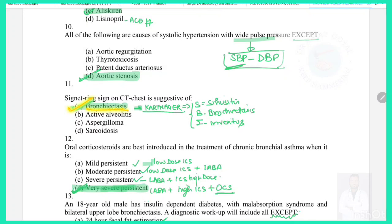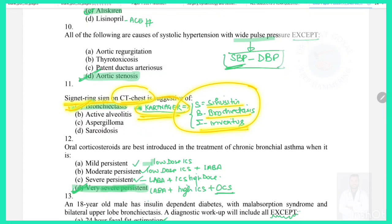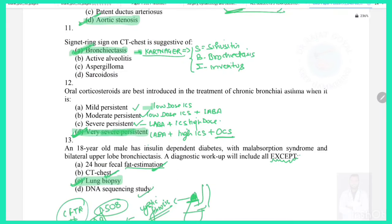Question 11: Signet ring sign on CT chest is suggestive of — this is a direct question and the answer is bronchiectasis. In bronchiectasis associated with Kartagener syndrome, we can see sinusitis, bronchiectasis, and situs inversus, and CT scan shows the signet ring appearance.